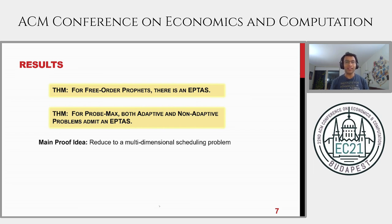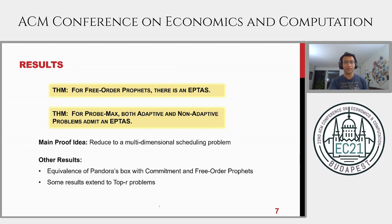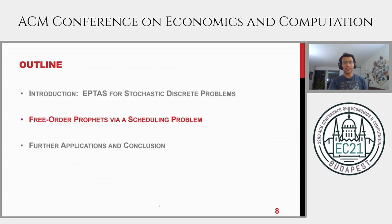The main proof technique we use is to always reduce our stochastic discrete problem into some kind of scheduling problem — where you have a bunch of jobs to schedule onto machines. We can define such a scheduling problem and use it to solve these discrete stochastic optimization problems. The techniques also extend to other problems such as the top-R problems and Pandora's box.